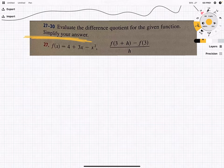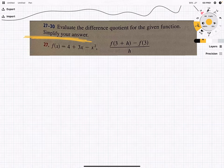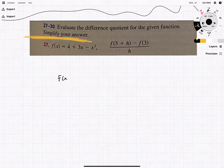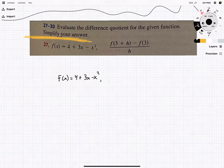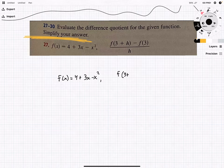So we'll have to take note of that. For problem 27, we have f of x equals 4 plus 3x minus x squared. And they want us to find the difference quotient with f of 3 plus h minus f of 3 all over h.